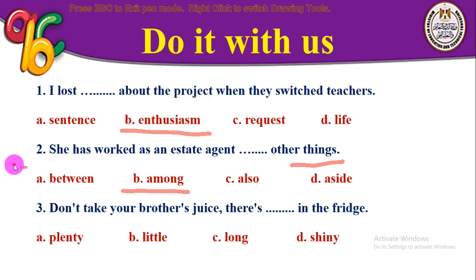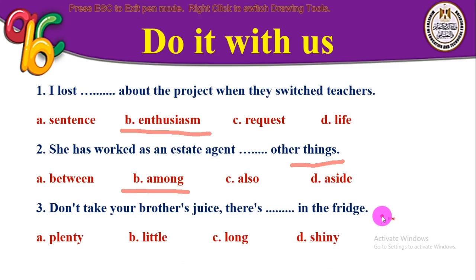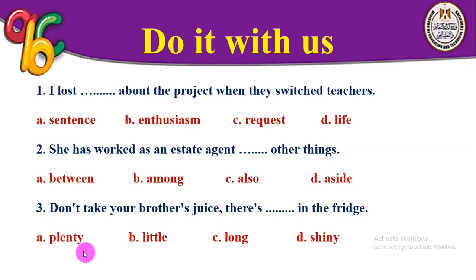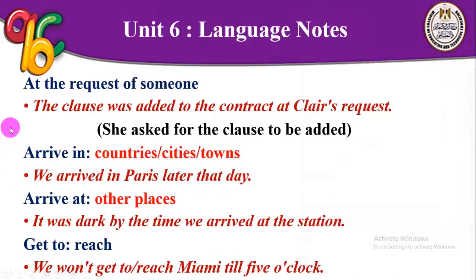Number three: 'Don't take your brother's juice — there is _____ in the fridge.' The choices are plenty, little, long, or shiny. The correct answer is plenty — 'Don't take your brother's because there is plenty in the fridge' — we still have much.